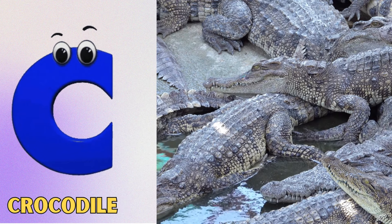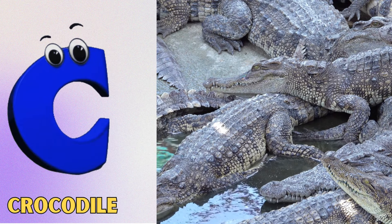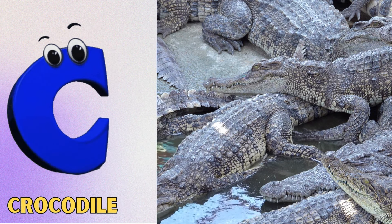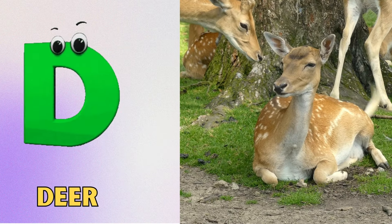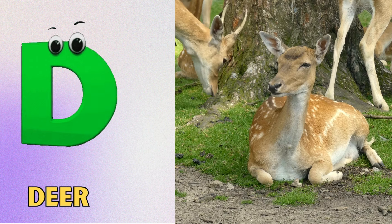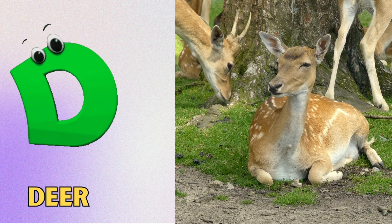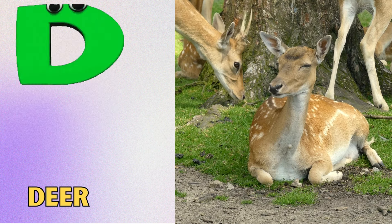C is for crocodile. Kuh, kuh, crocodile. D is for deer. Dh, dh, deer.